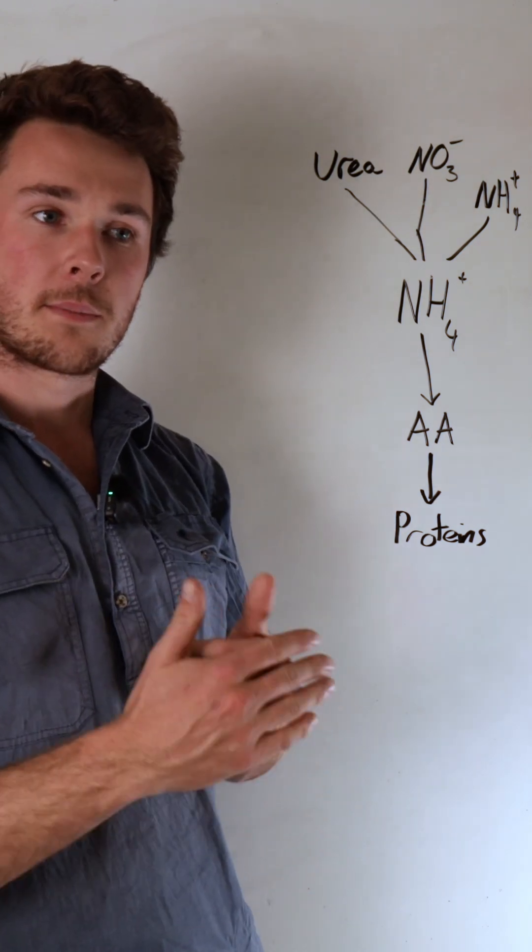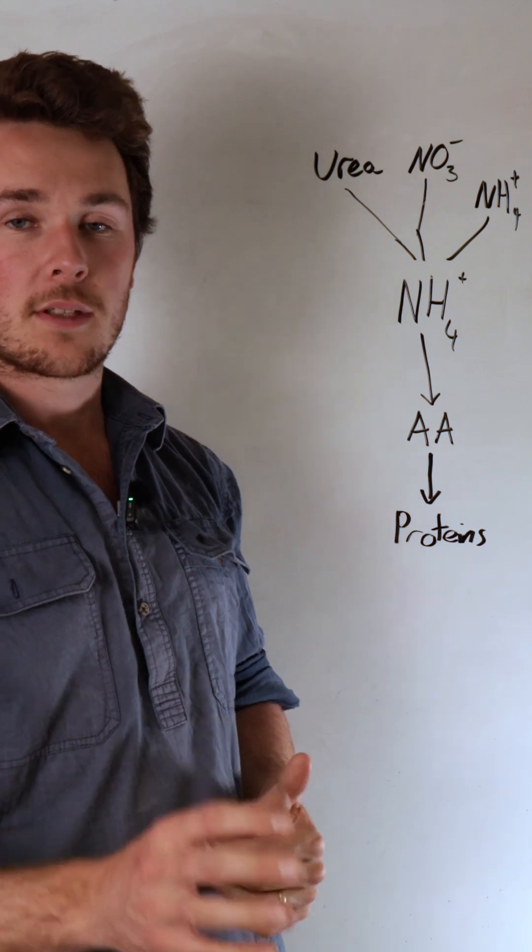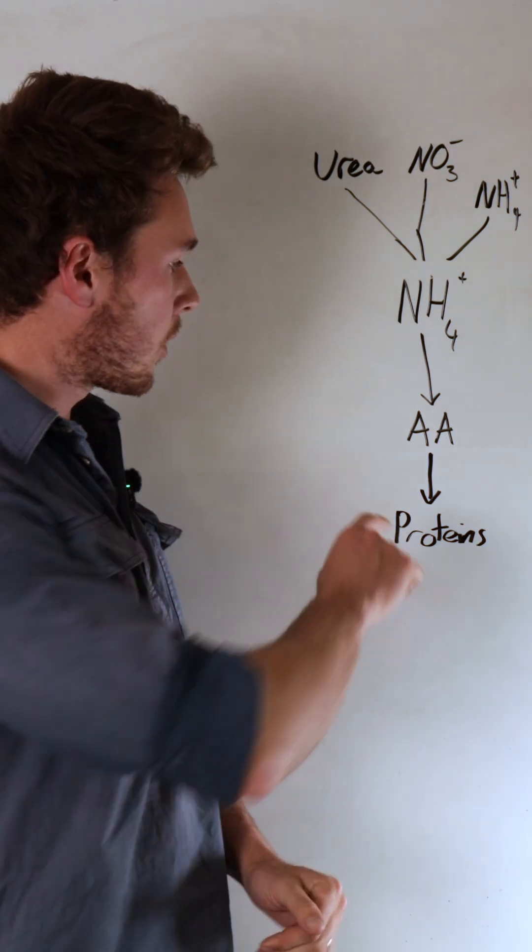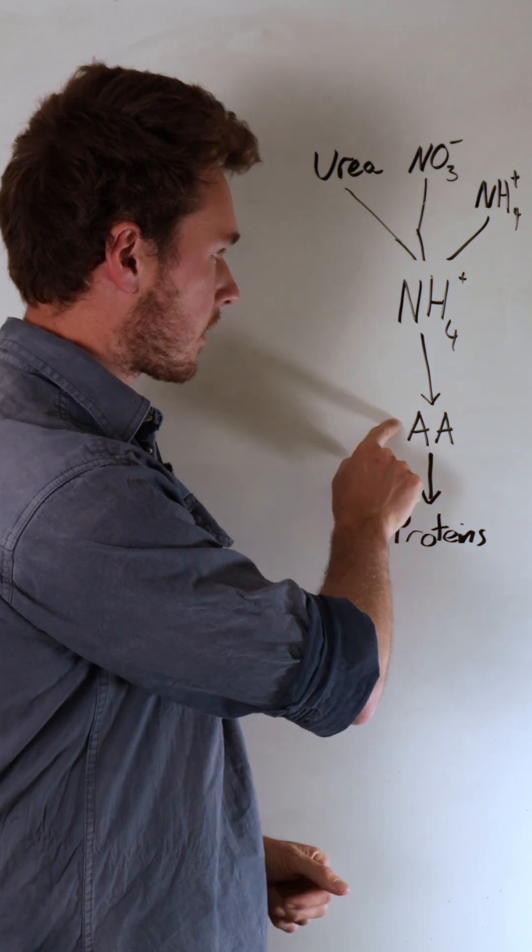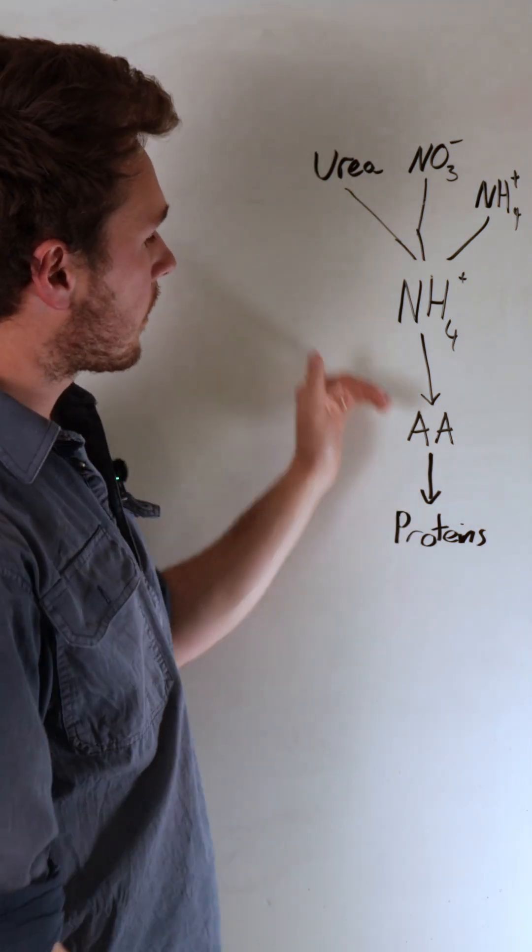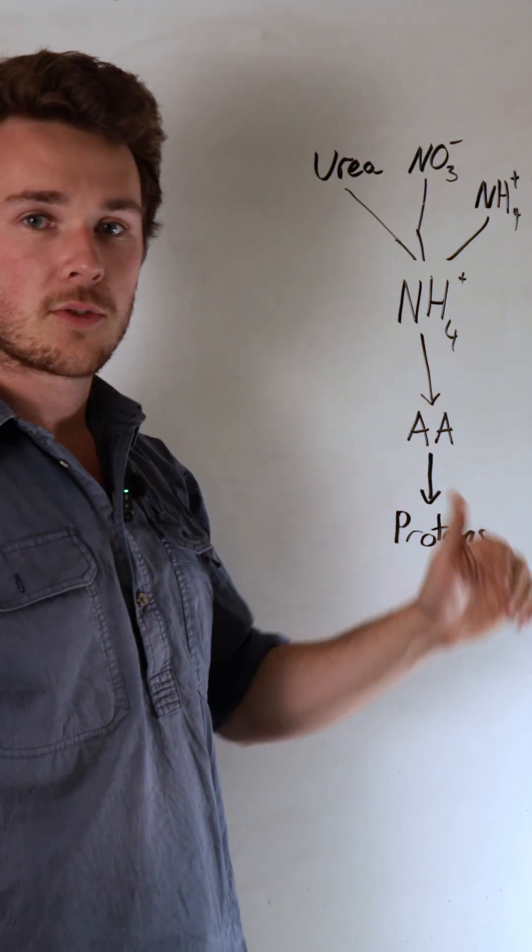which is also why if you can supply your plants with amino acids, that's the most energy and water efficient way of supplying nitrogen because your nitrogen source comes directly in here and you don't need to worry about all this. It goes straight into amino acids and straight into proteins.